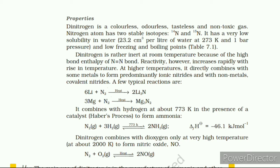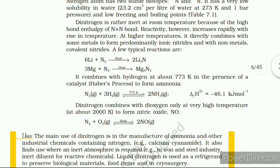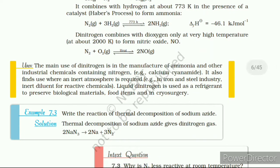The flow chart of the production of ammonia is shown in Figure 7.1. Earlier, iron was used as a catalyst with molybdenum as a promoter. Properties: Ammonia is a colorless gas with a pungent odor; freezing and boiling points are 198.4 K and 239.7 K respectively. In solid and liquid states it is associated through hydrogen bonds, which accounts for its higher melting and boiling points than expected on the basis of its molecular mass. The ammonia molecule is trigonal pyramidal with the nitrogen atom at the apex; it has three bond pairs and one lone pair of electrons.